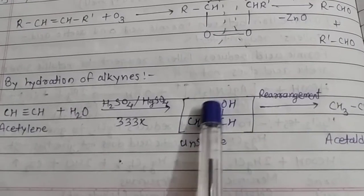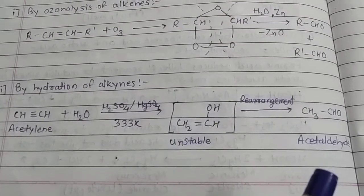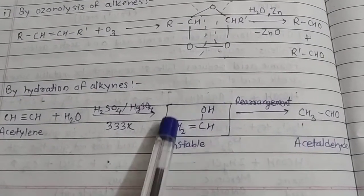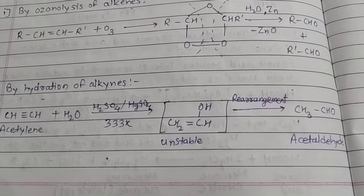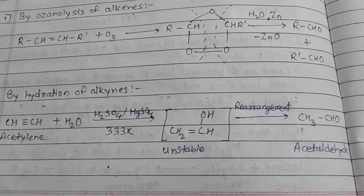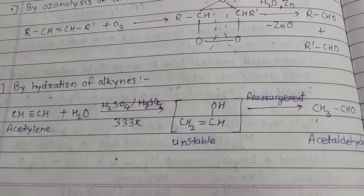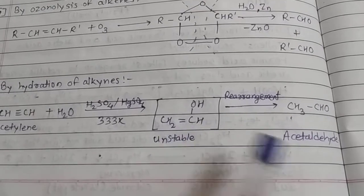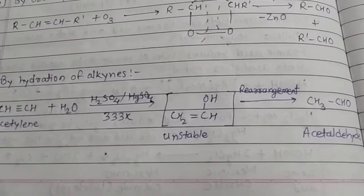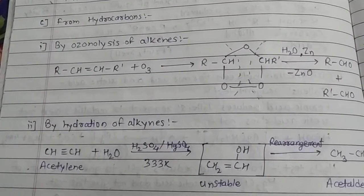After that we get this unstable intermediate. For this reaction, H2SO4 and HgSO4 are used at 333 Kelvin. Rearrangement converts this into acetaldehyde. We can convert acetylene into acetaldehyde by treatment with water in the presence of H2SO4, HgSO4 at 333 Kelvin. First we get an unstable intermediate that directly converts into acetaldehyde. That was the third type from hydrocarbons: by ozonolysis of alkenes and by hydration of alkynes.